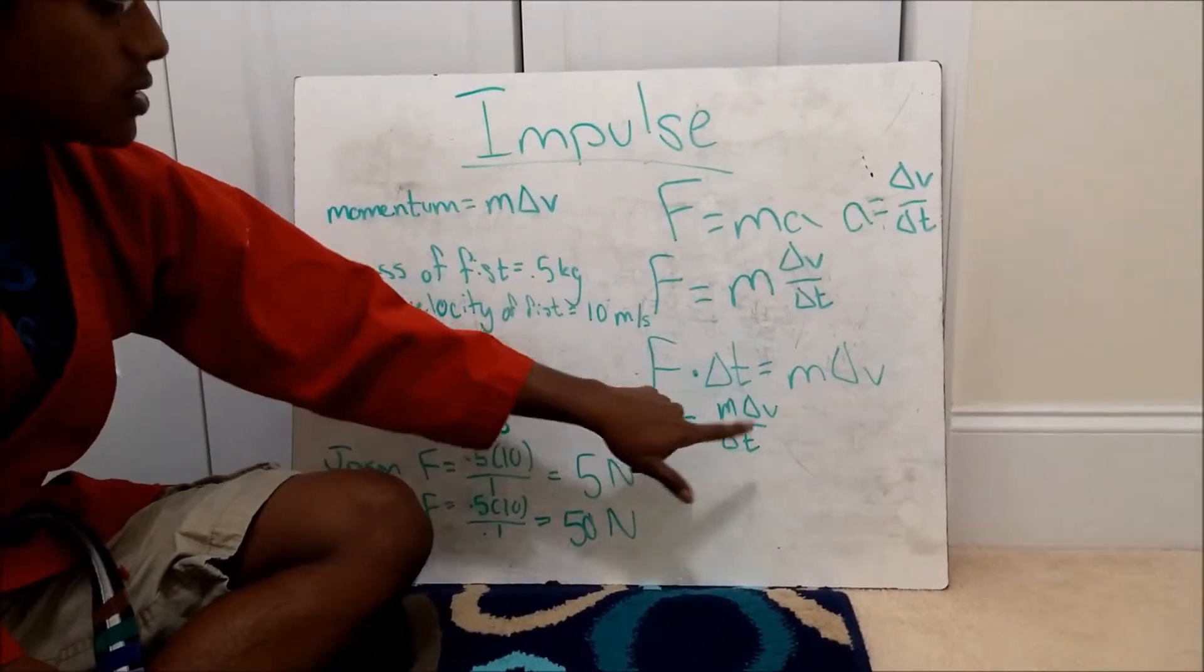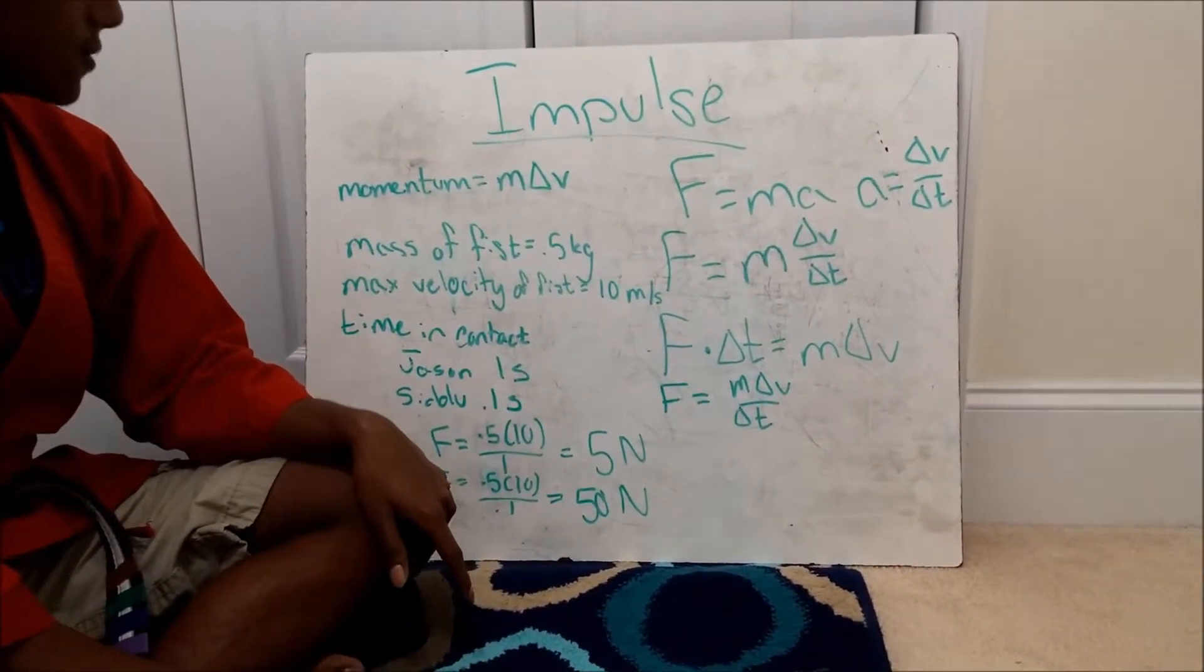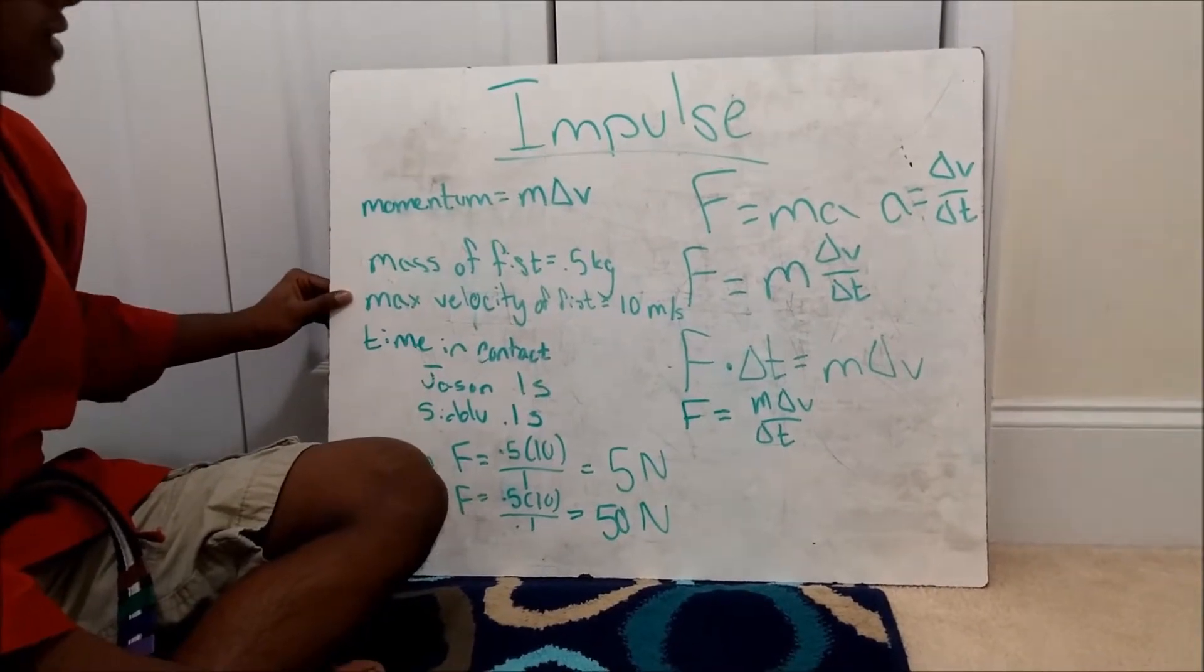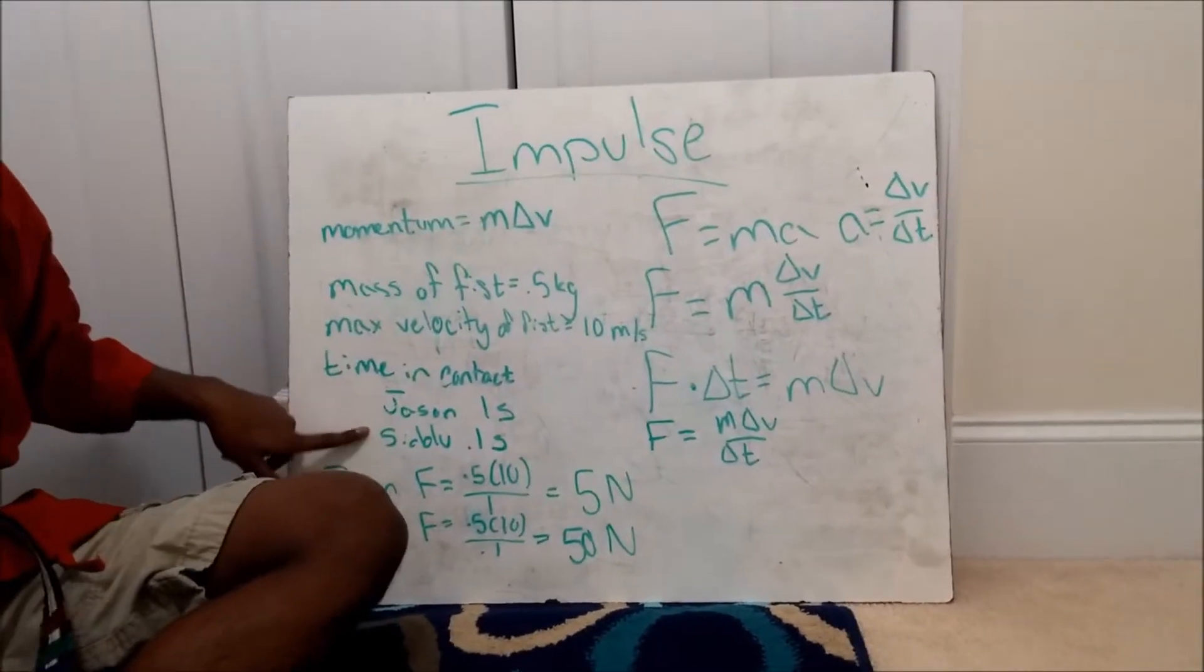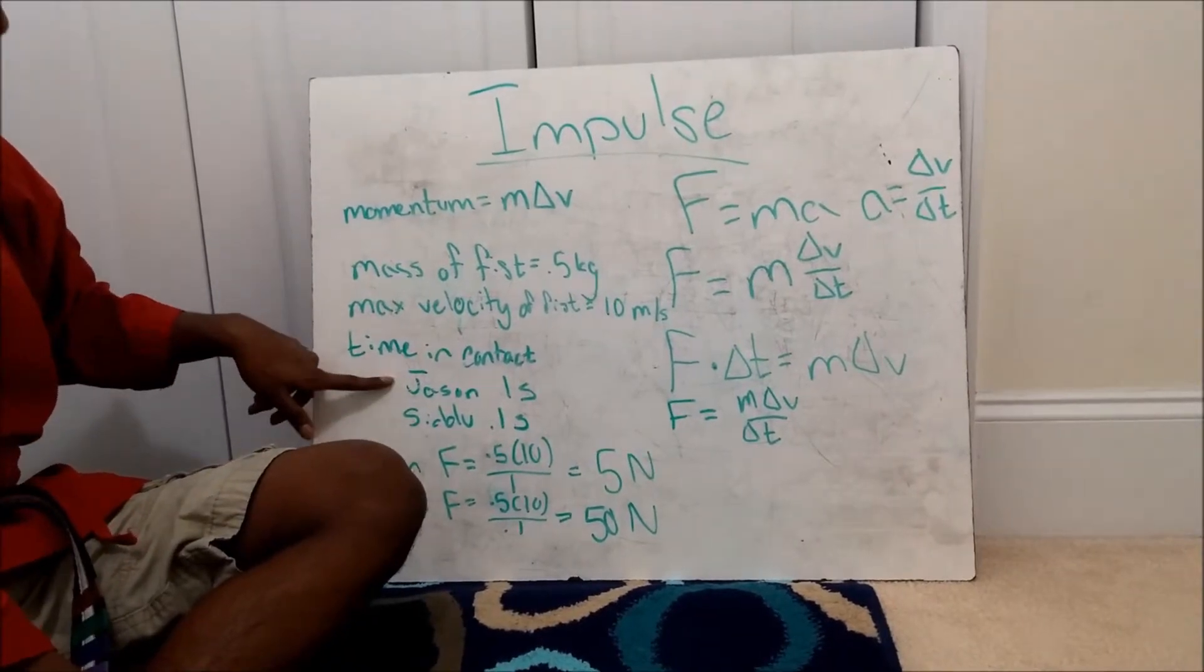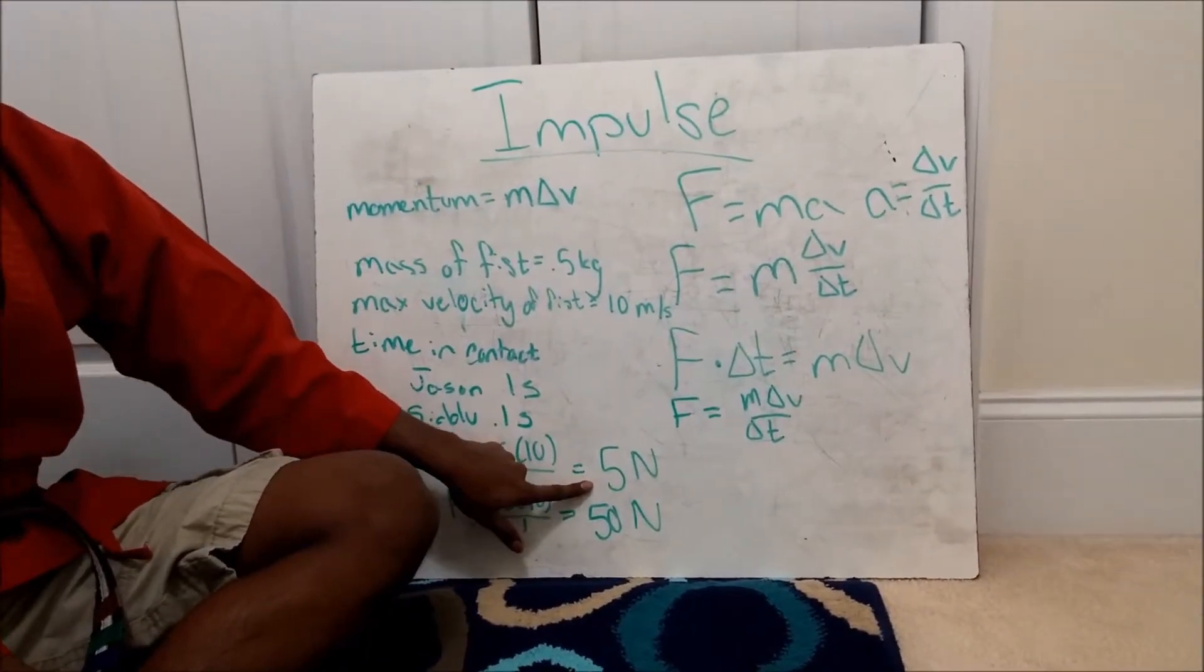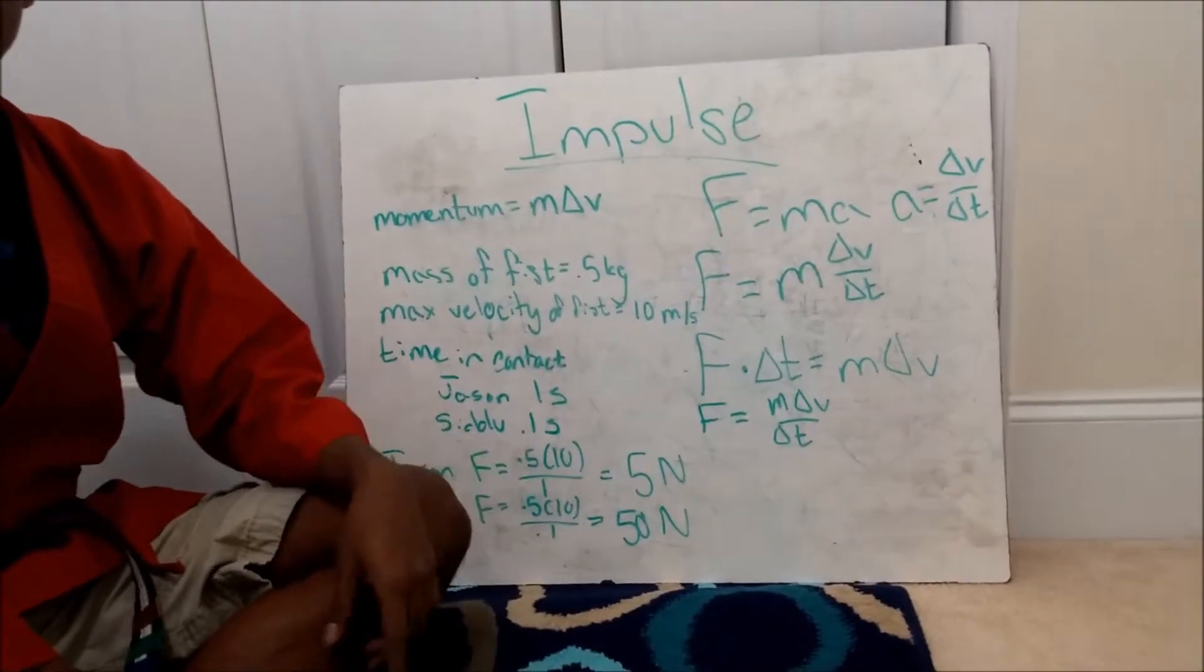Now, this numerator is actually the momentum of the fist, and we're going to assume that in our case of Jason versus Sidhu that they have the same momentum with a mass of about 0.5 kilograms and a velocity of 10 meters per second. Now, what Sidhu is going to do is he's going to change his time in contact with Jason's body to 0.1 seconds, while Jason is at a large 1 second. Now, we find if we plug into this formula that Jason will have a force of 5 newtons for his punch, while Sidhu will have a force of 50 newtons, which is 10 times Jason's original punch.